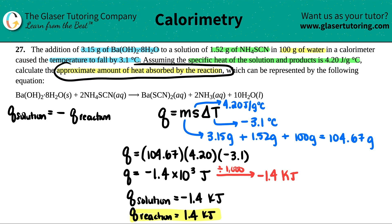They said calculate the approximate amount of heat absorbed by the reaction. This makes sense - positive means absorbed, so we did it correctly. The reaction absorbs 1.4 kilojoules of heat.